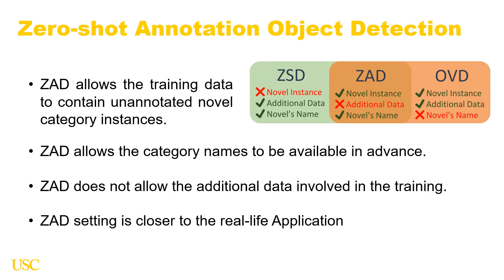So, given the limitations of both settings, we propose a new setting called zero-shot annotation object detection. This setting allows the training data to contain annotated novel category instances in the image, and also allows the category names to be available. However, zero-shot annotation object detection does not allow additional data to be involved in training. By defining this new setting, we exploit novel category information even though we do not have any novel category annotations.